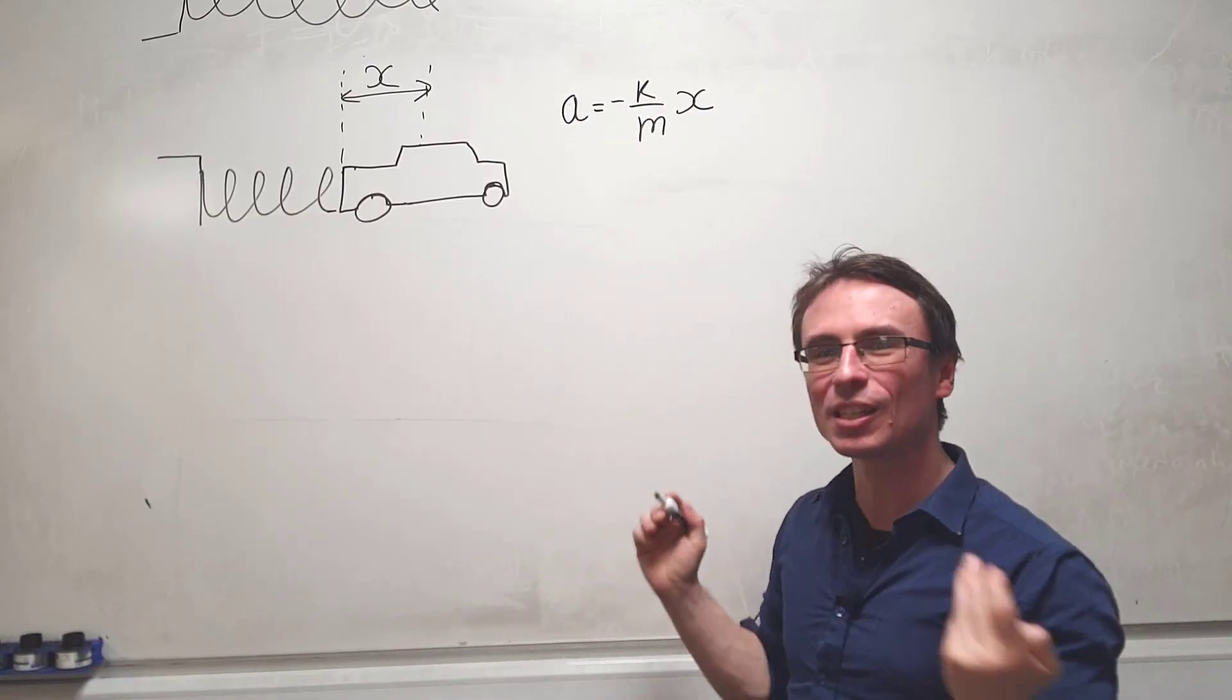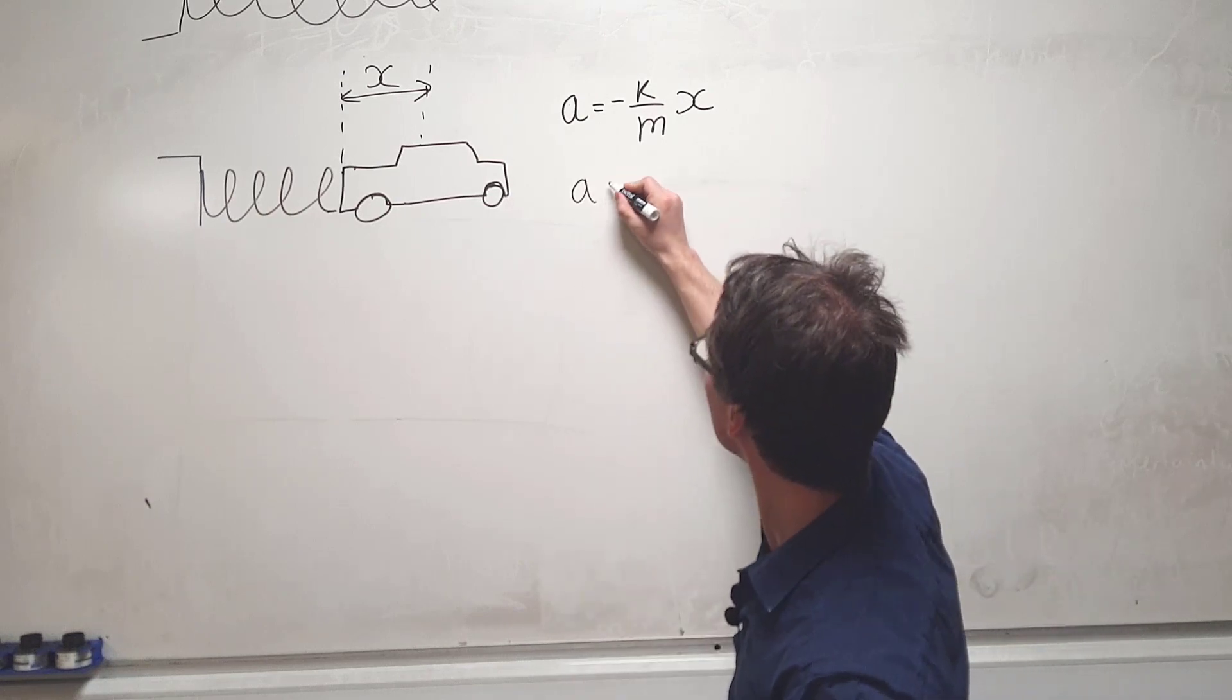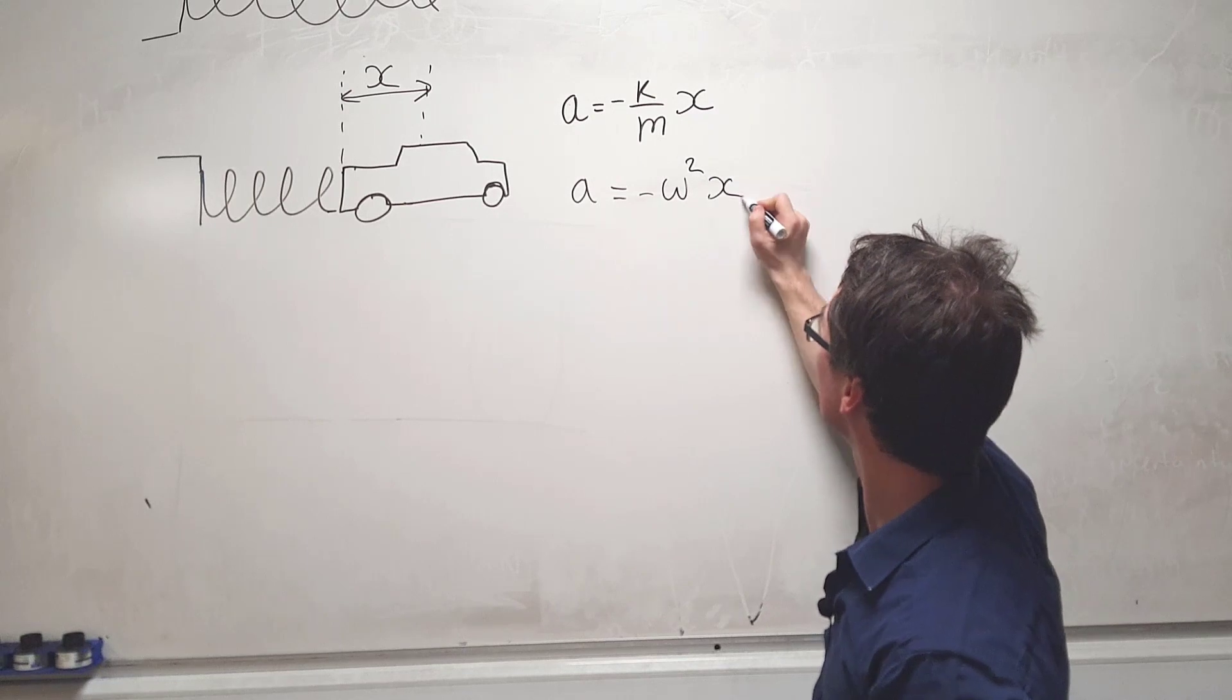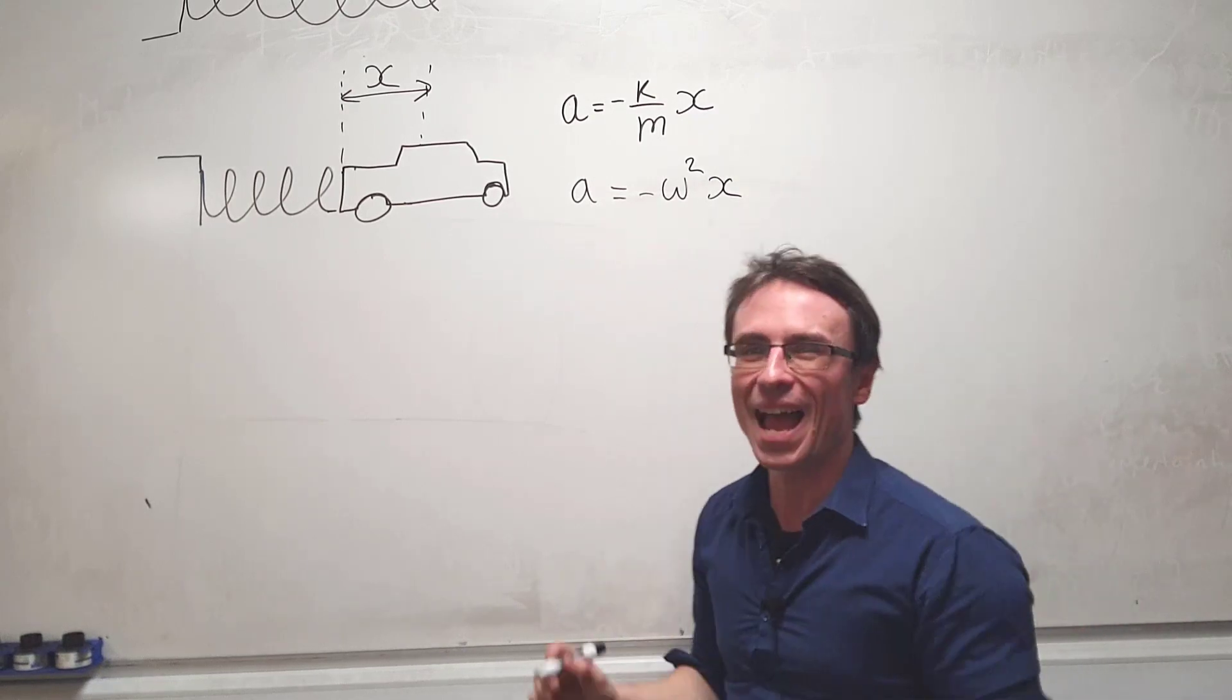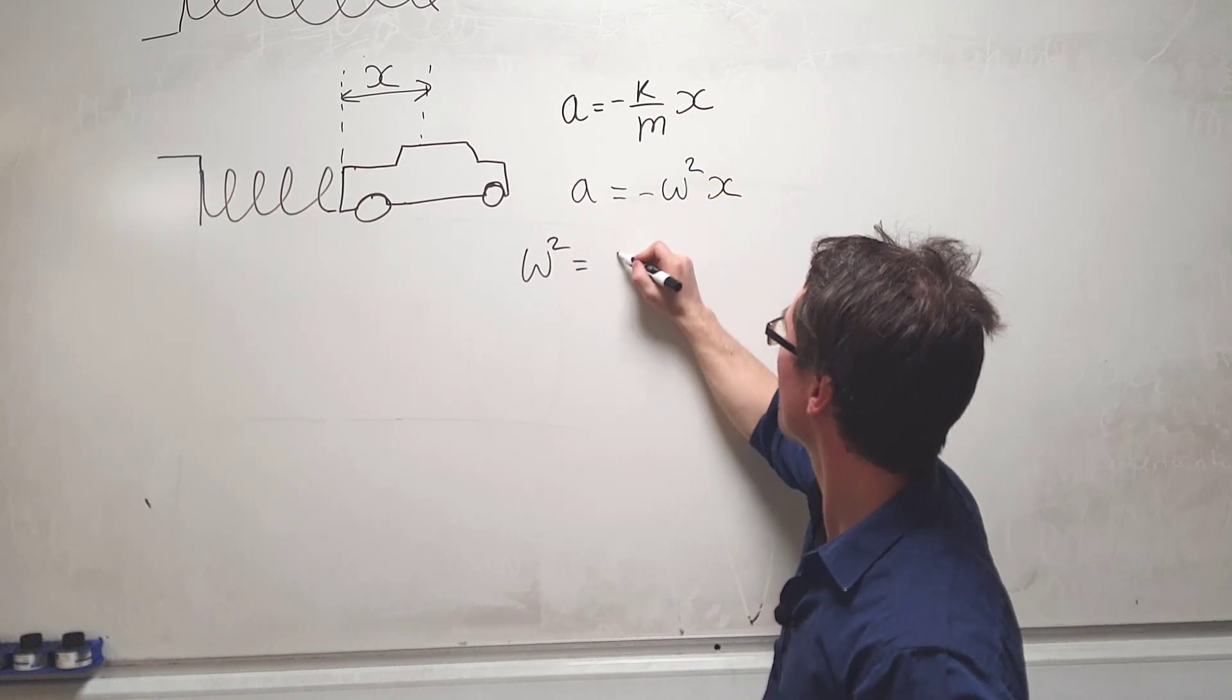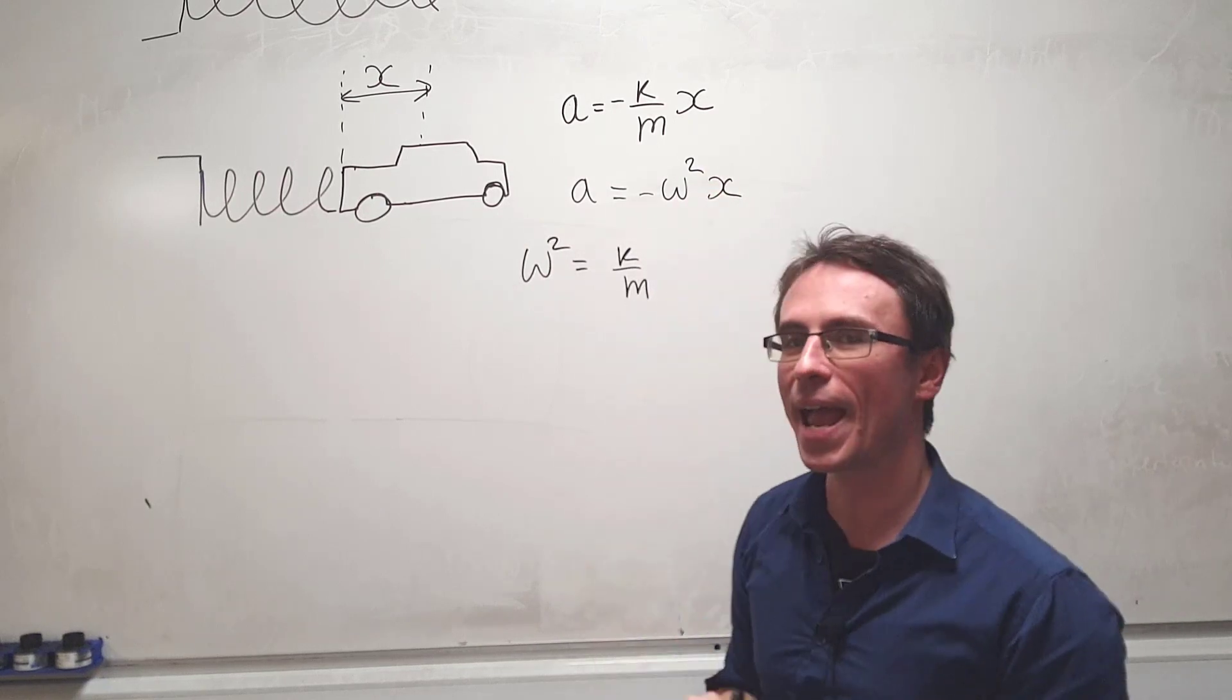As the spring is performing simple harmonic motion, we can equate this with the simple harmonic equation, a = -ω²x, and we can see that ω² will be given by k/m.